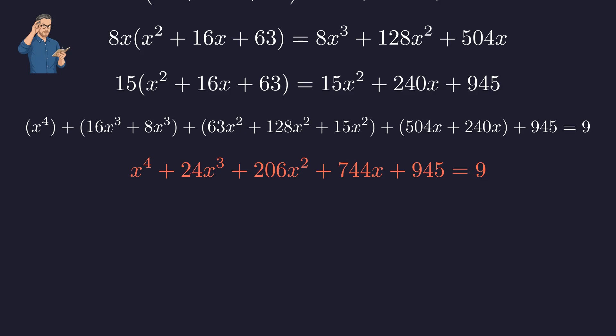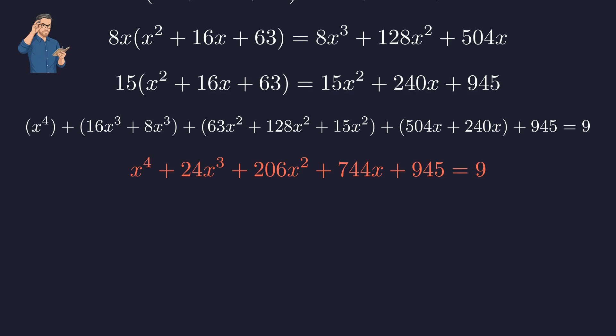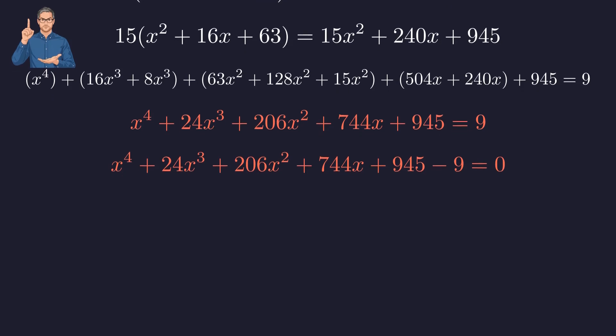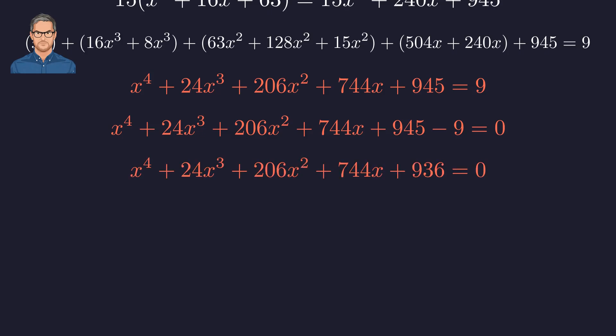Combining these like terms gives us the full quartic polynomial. To solve this, we need to set the equation to zero. We subtract 9 from both sides. This leaves us with the final form.